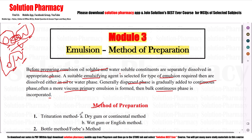There are two types of methods of preparation: the trituration method and the bottle method. In the trituration method, we use a mortar and pestle. This includes two sub-types: the dry gum method (continental method) and the wet gum method (English method).